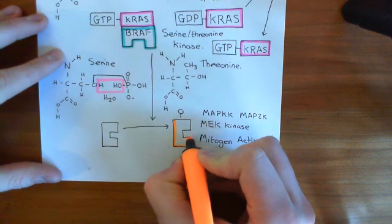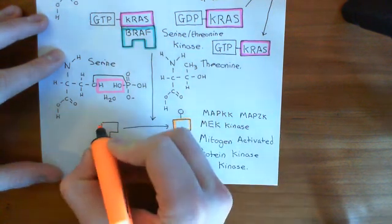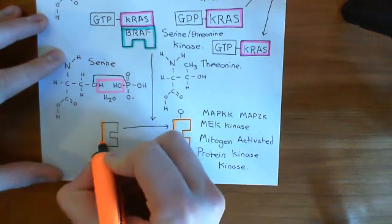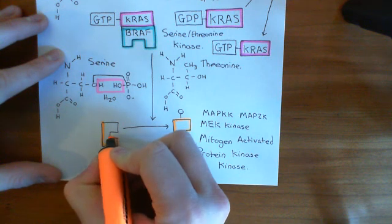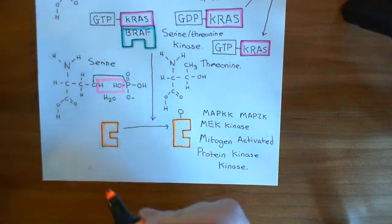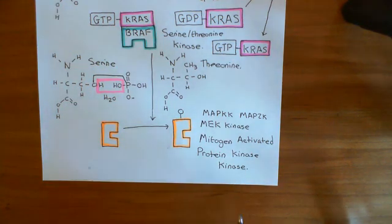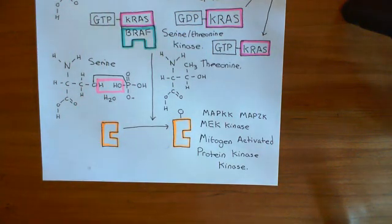Once the phosphate group has been added onto MEK kinase, it becomes active as a serine-threonine kinase. It is going to phosphorylate the mitogen activated protein kinase, and we'll continue this discussion in the next video.